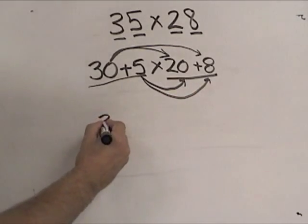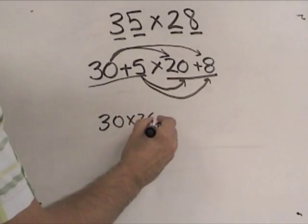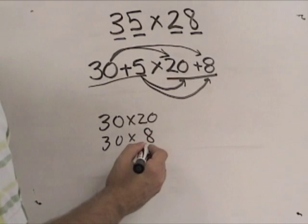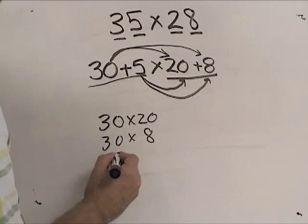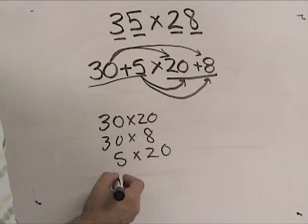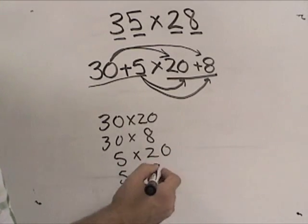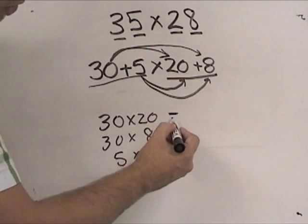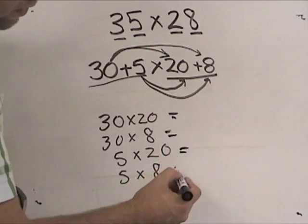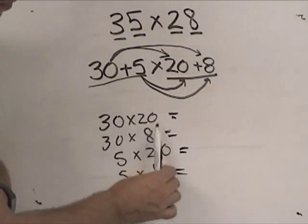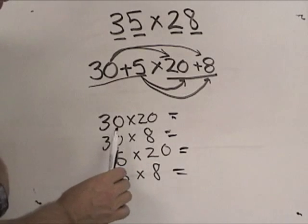So if I were to write this problem out, we would have 30 times 20, we would have 30 times 8, we would also have 5 times 20, and we would have 5 times 8. So as you can see, this is all the combinations here. Now, the nice thing about this method is you don't have to do a lot of math thinking about what the answers to these problems are.